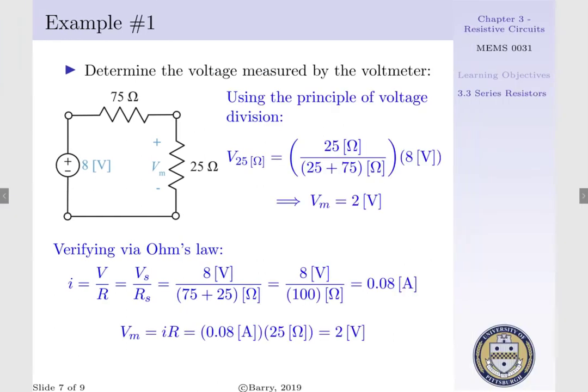Now if we use Ohm's law once again to determine the voltage drop across the resistor, V sub M would be equal to I times our resistance, or 0.08 amps times 25 ohms, which gives us 2 volts.